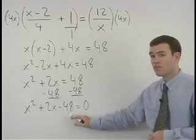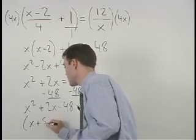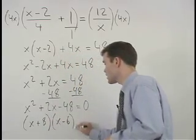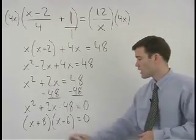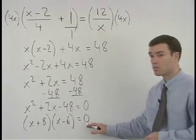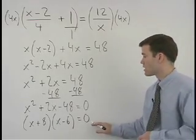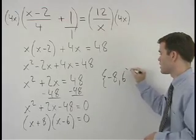Now we can factor to get x plus 8 times x minus 6 equals 0. So either x plus 8 equals 0 or x minus 6 equals 0, which means that our solution set is negative 8, 6.